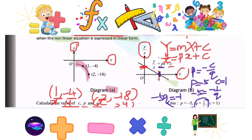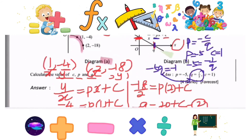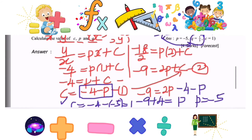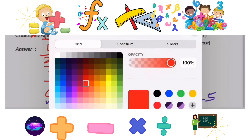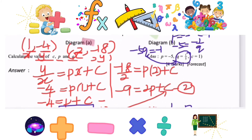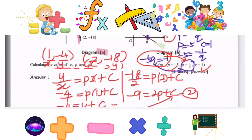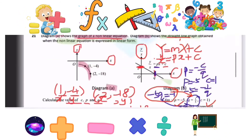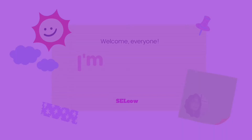That's how we solve the constants by comparing the gradient and using points from the linear equation. We have p = -5, c = 1, and q = 1/5. That's all for solving linear and non-linear equations. Bye-bye and have a nice day!